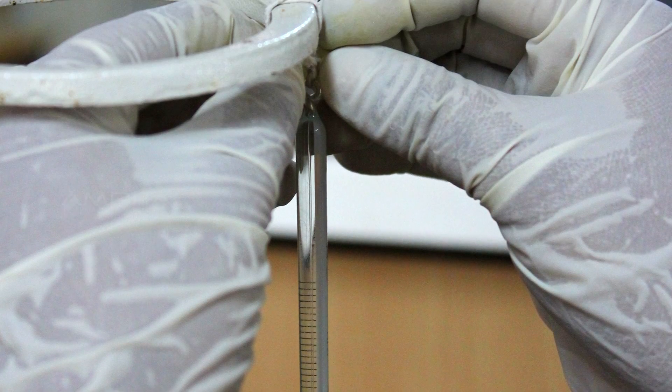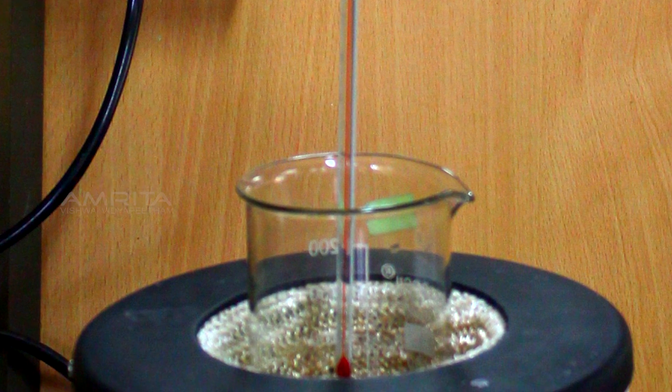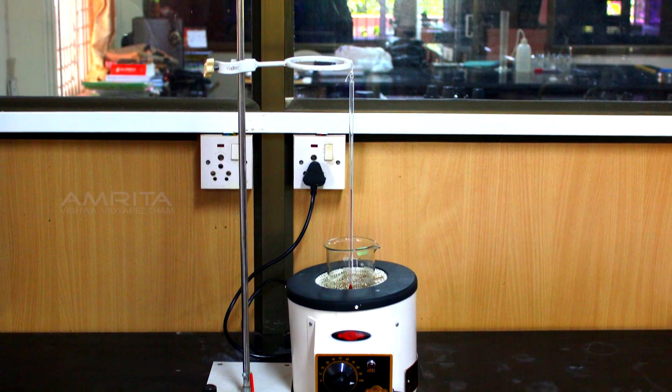Procedure: First, suspend a thermometer using a clamp stand so that its bulb is at the centre of the beaker which is placed inside the heating mantle.